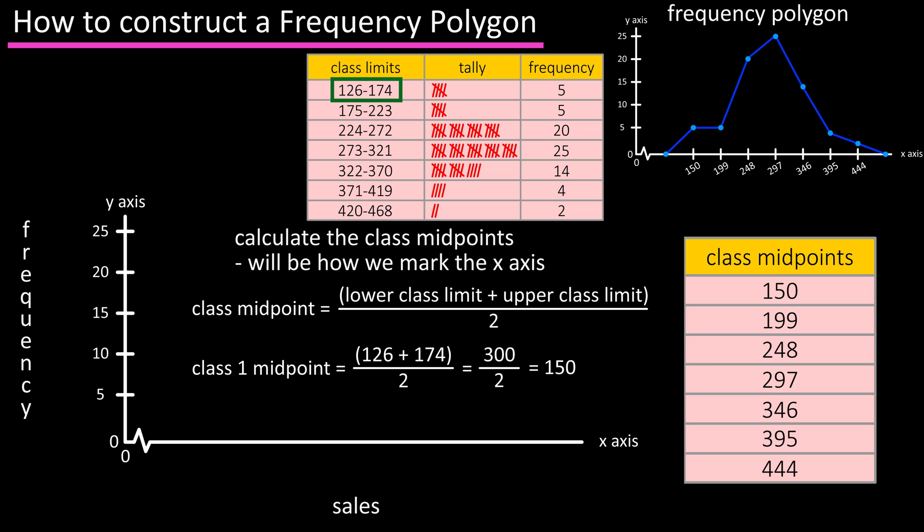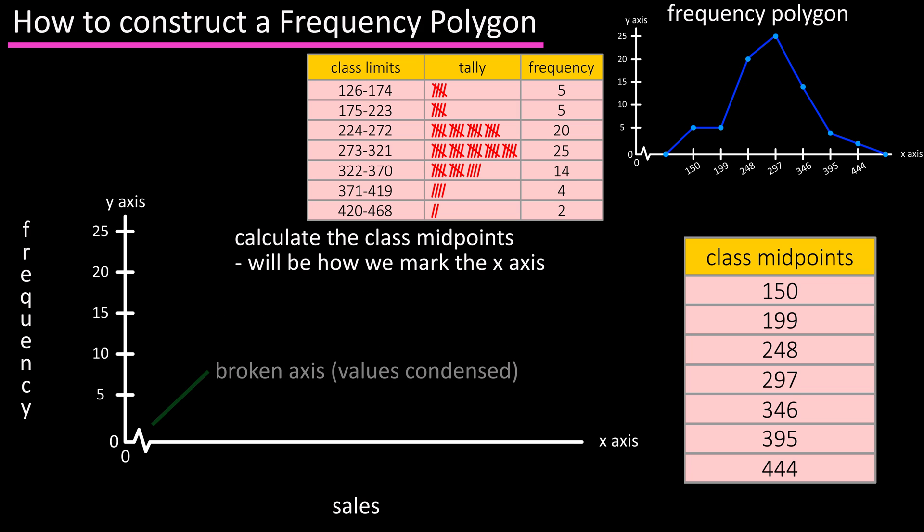Now that we have the class midpoints, we can label the x-axis. This little squiggle here basically means a broken axis, or it lets the viewer know that there are some values kind of scrunched up here. We can start by marking the value of the midpoint of class 1 somewhere to the right of our squiggly line, so 150 right here.